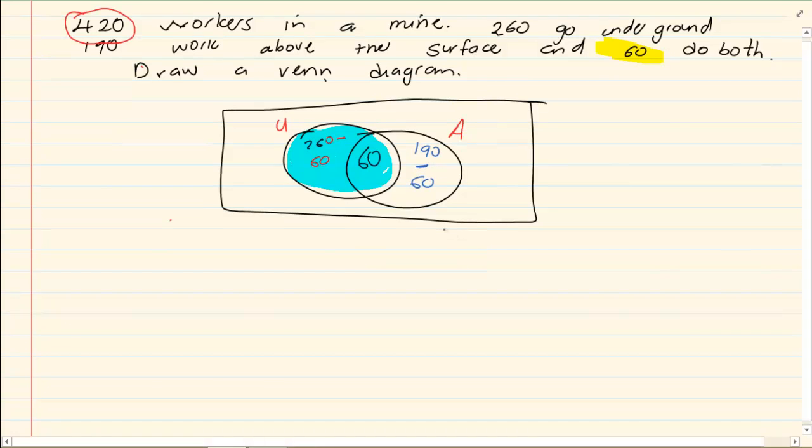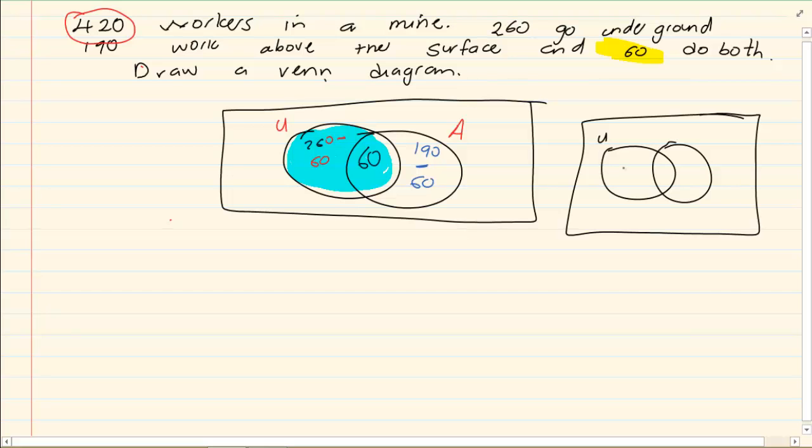To determine how many are underground, 260 go underground. It would be 260 minus the 60 that we already got, because underground would be the entire circle which includes the 60. Then if we say 190 is above then we have 190 minus 60. So what do we have so far? We have that the undergrounds are 260 minus 60 which is 200. We have 60 that is in both. And then we have 190 minus 60 which is 130.